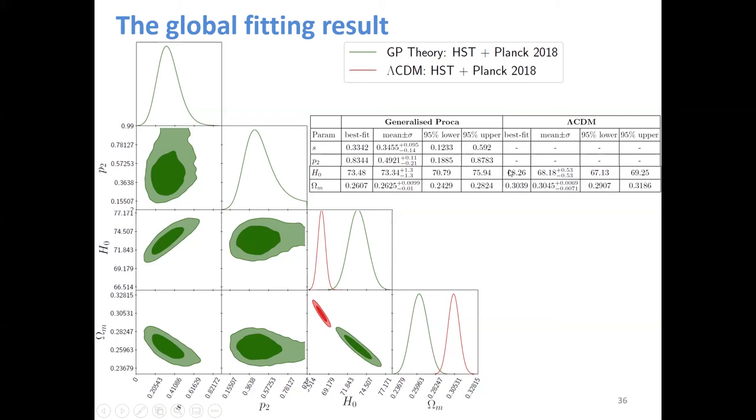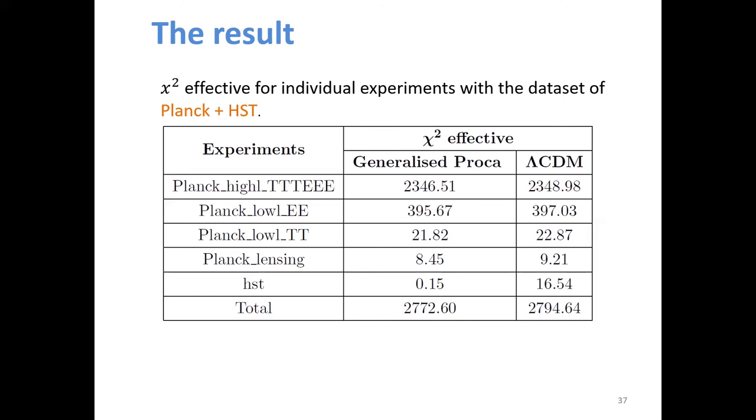Now we show the table result of chi-square effective for each data site. We can see the generalized Proca theory has a smaller chi-square in every kind of CMB measurement and has a smaller chi-square for the R19 prior. So the total chi-square is much smaller than the lambda CDM. It means the generalized Proca theory is more closer to the CMB and HST observation.